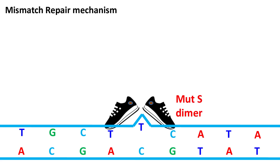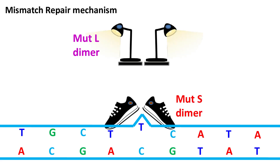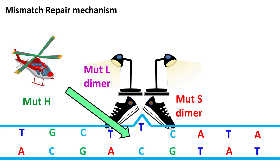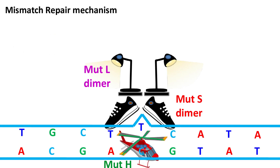In the next step, MUT-L dimer binds the MUT-S protein. Next, MUT-H protein binds the MUT-S–MUT-L complex.